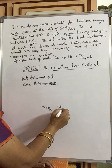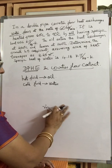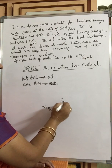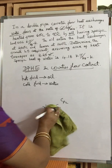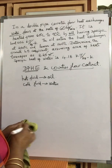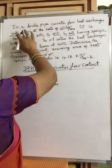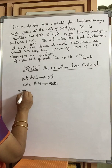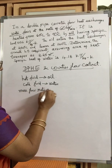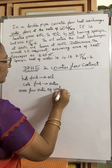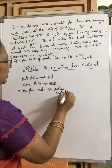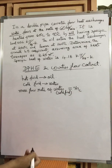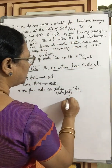Now, what other data is given? Water flows at the rate of 60 kg per minute — that is the mass flow rate. Water is the cold fluid, so mass flow rate of cold fluid, M dot C, is 60 kg per minute.